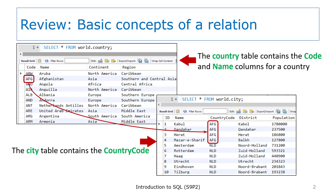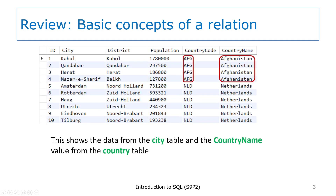Here you see the country table on the left and the city table on the right. The select statements used to get the result sets are simple select all statements. The country table contains the country code and the country name. The city table contains the country code. What we want to end up with is a result set that includes all of the data in the city table and also the country name. To get the country name included in the result set, we can join the country table and the city table. We'll join the tables on the country code value.